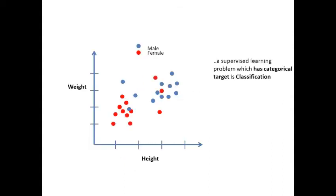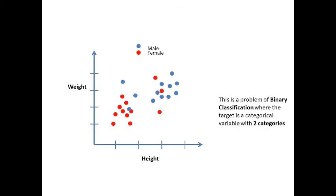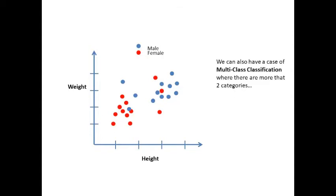Classification. A supervised learning problem which has categorical target is classification. This is a problem of binary classification where the target is a categorical variable with two categories, in our case male and female. We can also have a case of multi-class classification where there are more than two categories.